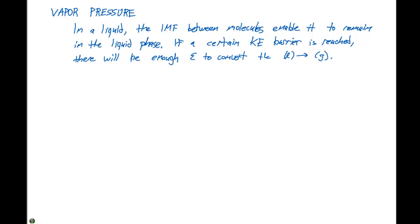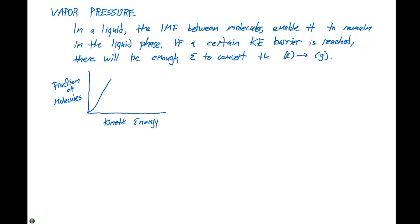We typically analyze these by drawing up a plot. The plot we're going to look at has kinetic energy on the x-axis and the fraction of the molecules on the y-axis — more importantly, the fraction of the molecules in each particular phase. If we're at a lower temperature, we can see a graph that looks something like this, and we define a point here to be our minimum kinetic energy barrier.